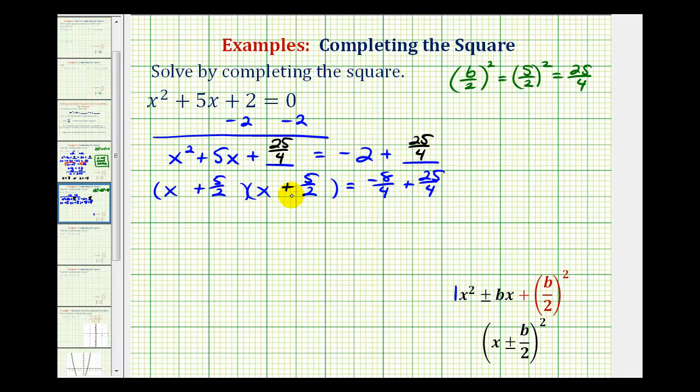On the left, we can write this as (x + 5/2)² equals, on the right, -8/4 + 25/4 = 17/4.